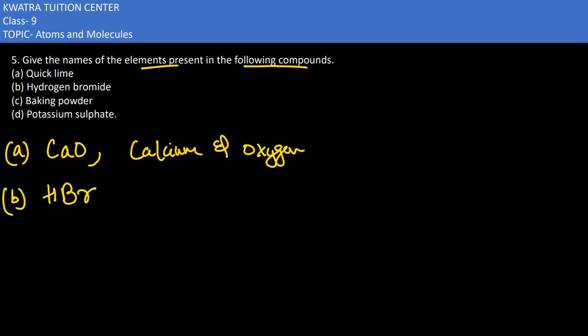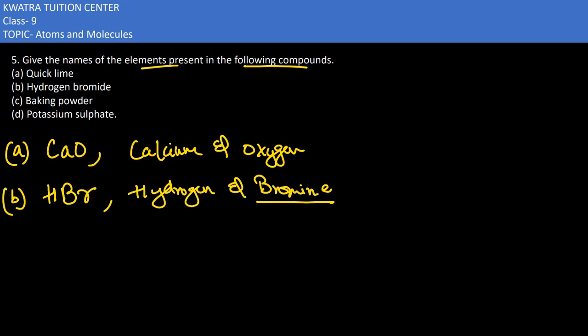In the second part we have hydrogen bromide. So how do you write hydrogen bromide? It is HBr. The formula is HBr. So in this we have one element as hydrogen and the other as bromine. Keep in mind: in the compound it is bromide, but the element is bromine.